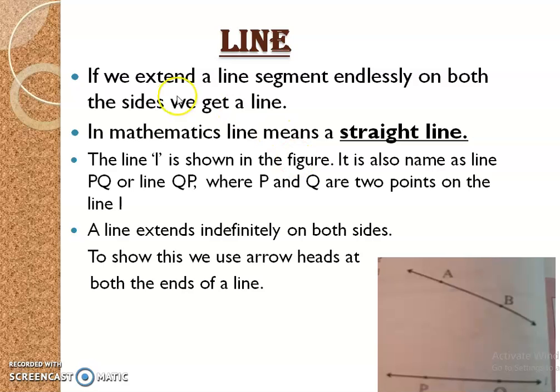Line: We extend a line segment endlessly on both sides, we get a line. In mathematics, line means a straight line. The line L is shown in the figure. It is also named as line PQ or line QP where P and Q are two points on the line L. The line extends indefinitely in both directions. To show this, we use arrow heads at both ends of the line.